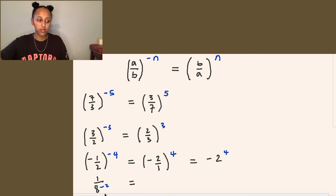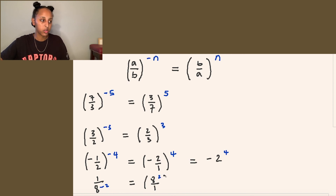For our final example, we have 1 over 8 to the power of negative 2. Once again, we flip it to get 8 over 1 to the power of 2, which you can simply write as 8 to the power of 2.